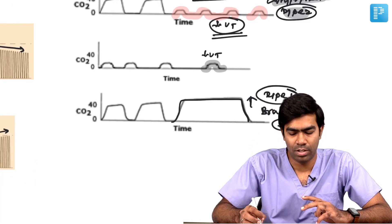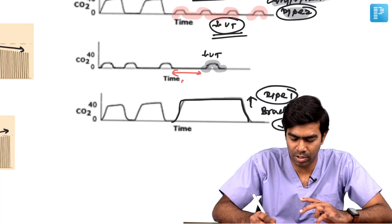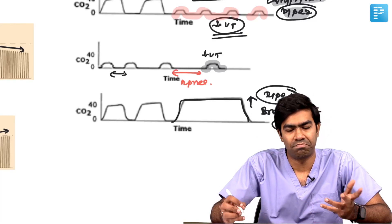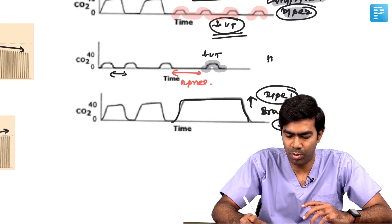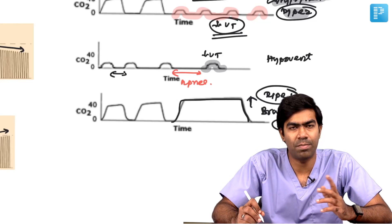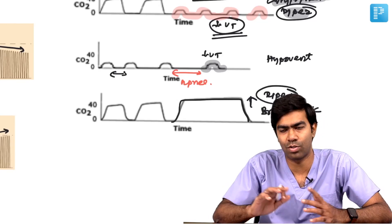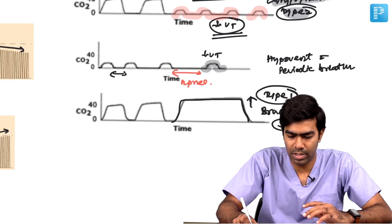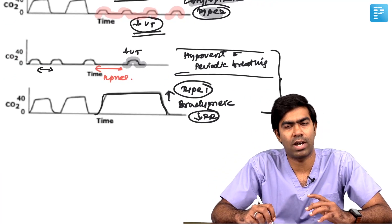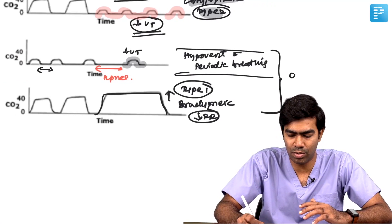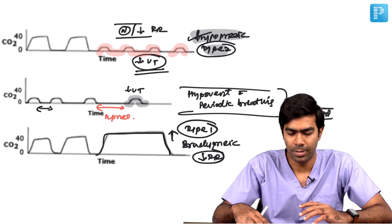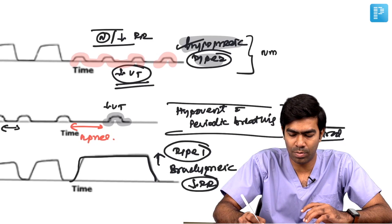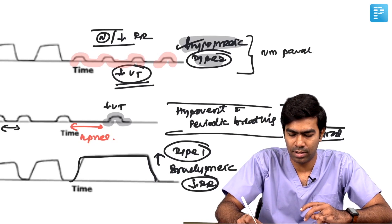This is the third type of hypoventilation — low tidal volume resulting in small EtCO2 curves at baseline, with periods of apnea followed by periods of regular breathing. This is hypoventilation with periodic breathing. Type 1 hypoventilation and this periodic breathing type are usually due to central causes — brain-related. But Type 2 hypopneic hypoventilation is usually due to neuromuscular paralysis or neuromuscular weakness.